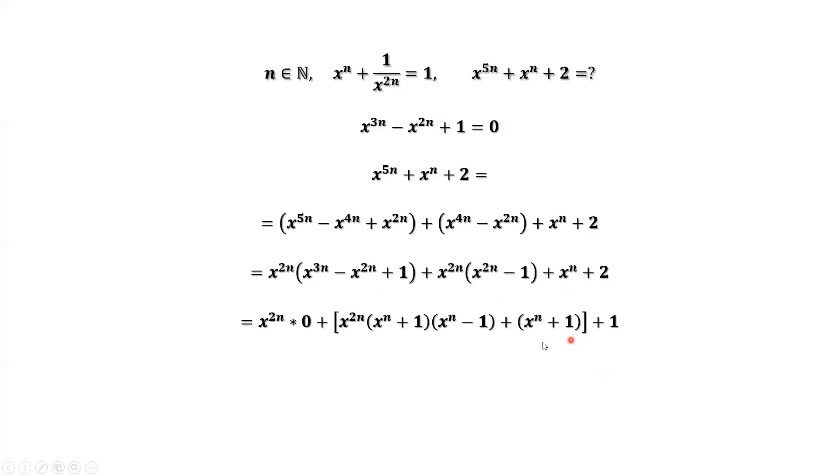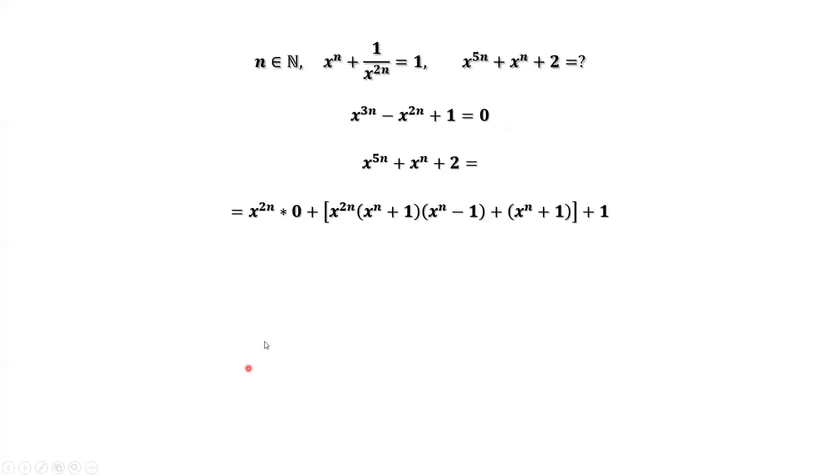Now in this group, what is the common factor? x^n + 1. We can factor this out. This is the remaining part: for the first part, 1 is the second part.